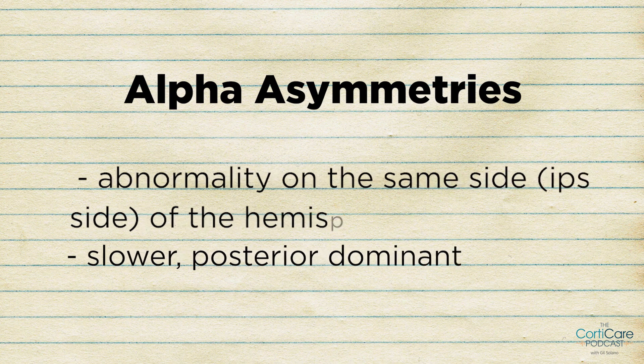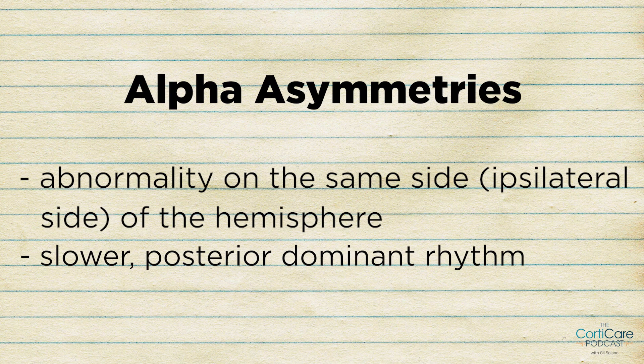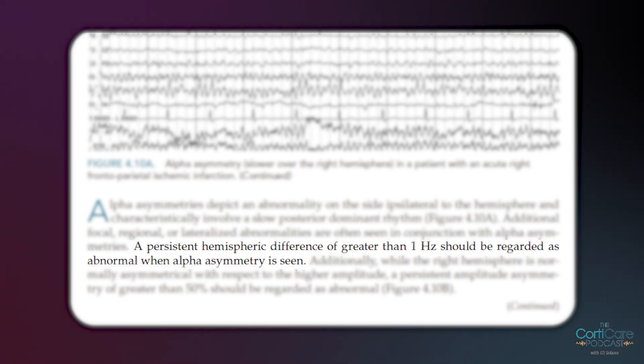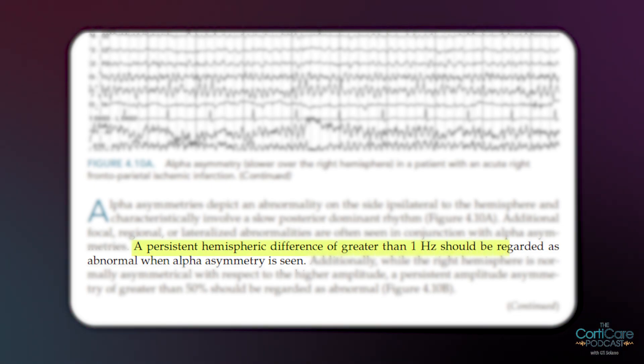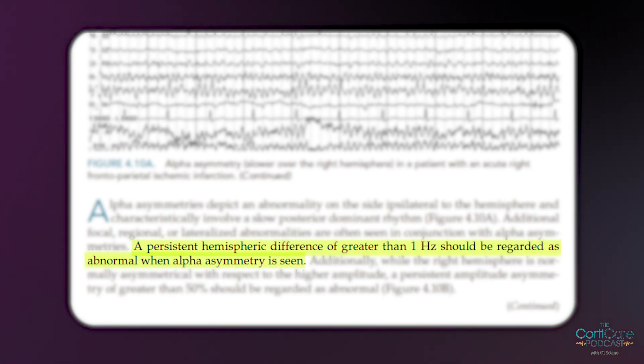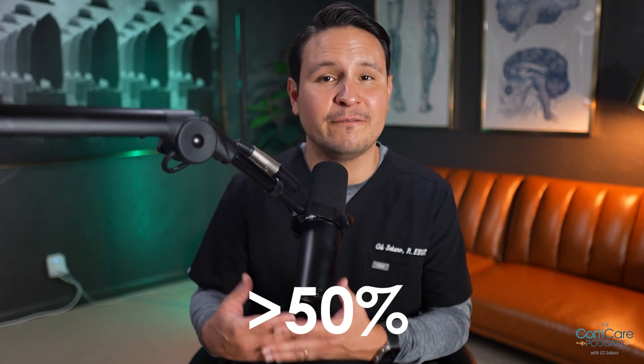Now let's talk about alpha asymmetries. These occur when there's an abnormality on the same side, or ipsilateral side, of the hemisphere that's being examined. Typically, this involves a slower posterior dominant rhythm. According to a study published in Clinical Neurophysiology, a persistent difference of greater than one hertz in alpha rhythm between hemispheres is considered abnormal. Similarly, while it's normal for the right hemisphere to be a little asymmetrical in terms of higher amplitude, a persistent amplitude asymmetry greater than 50% should also raise red flags.